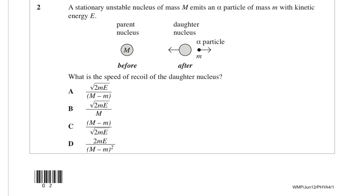Okay, a stationary unstable nucleus. Unit 5 recall. A nucleus of mass M emits an alpha particle of mass m with kinetic energy E. What is the speed of recoil of the daughter nucleus?